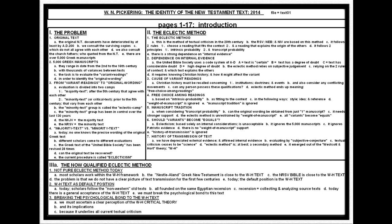The United Bible Society uses a code system of A through D: A means the text is certain, B means the text has a degree of doubt, C means the text has considerable doubt, and D means the text has a high degree of doubt. The Eclectic method relies on subjective judgment, relying on the two rules of context and which text best explains the others.